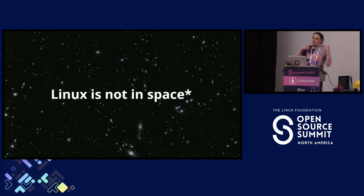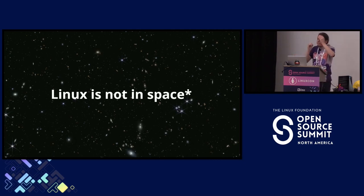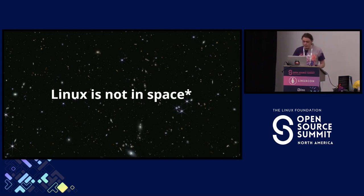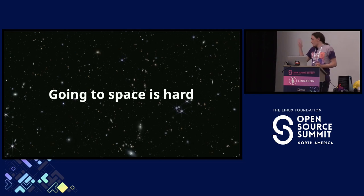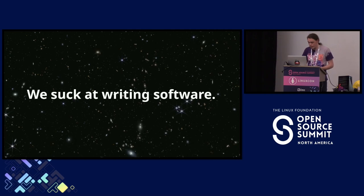Linux is technically onboard the ISS — some or all of the terminals used to interact with space station subsystems run Linux. But nothing in space really is using Linux for attitude control, and there are good reasons for this. If I can summarize anything about the last 25 minutes, partially it's because it's literal rocket science. We've only been writing Linux for, what, 30 years? There's this common misconception that NASA wants the latest and greatest bleeding-edge stuff, but nothing could be further from the truth.